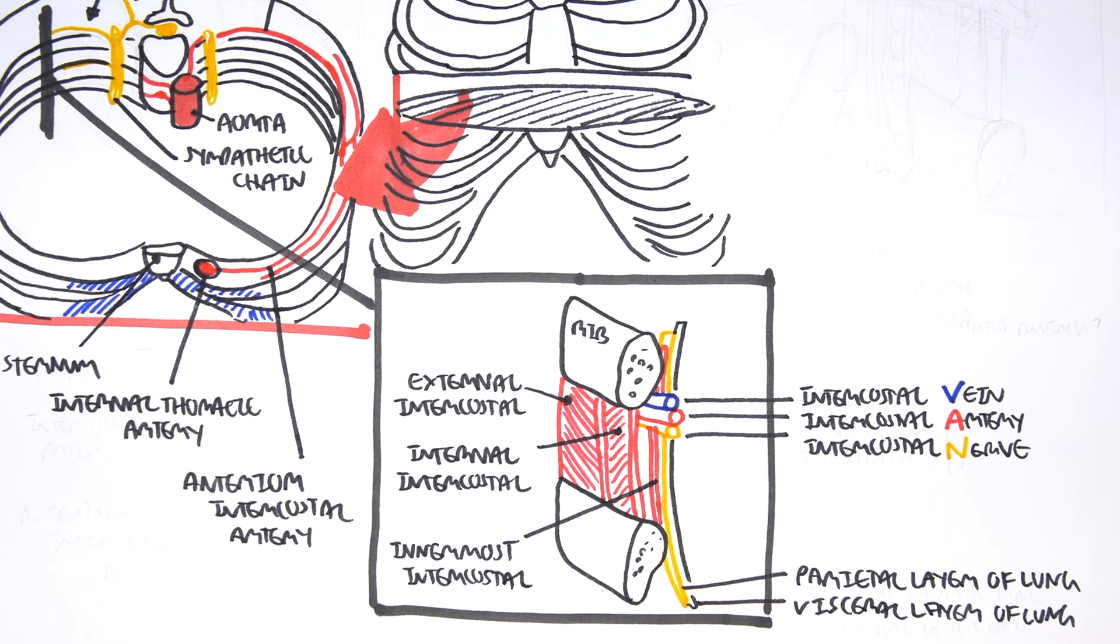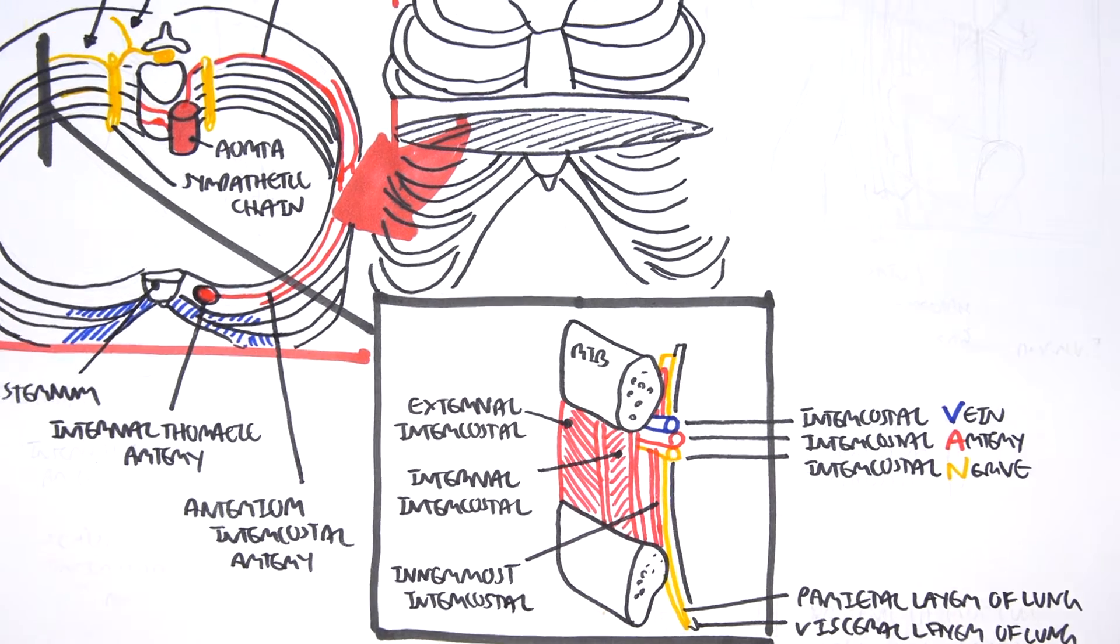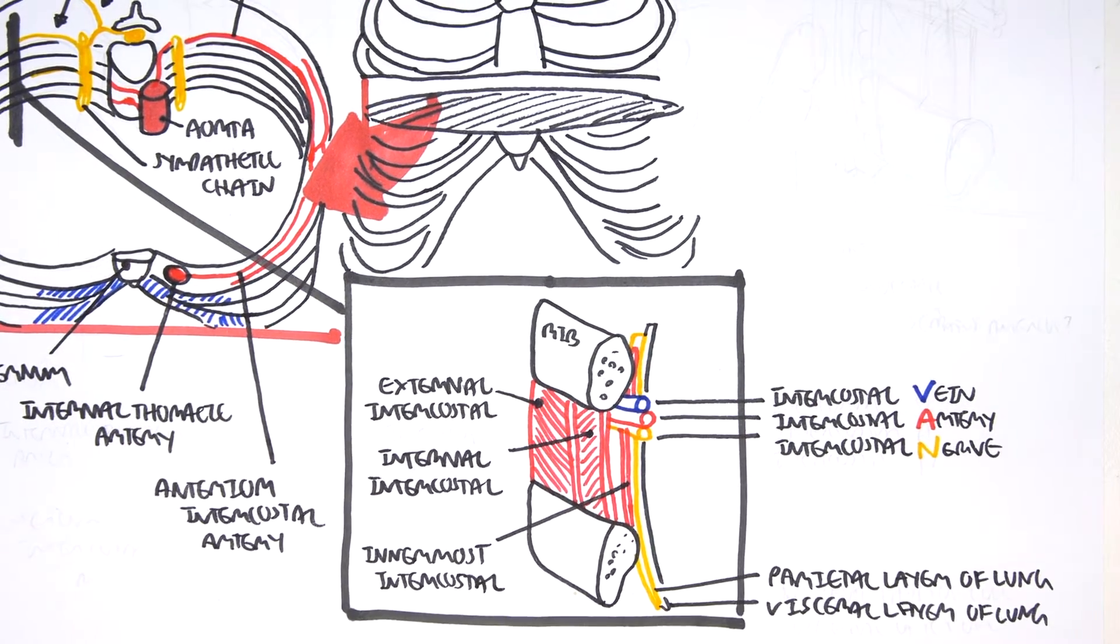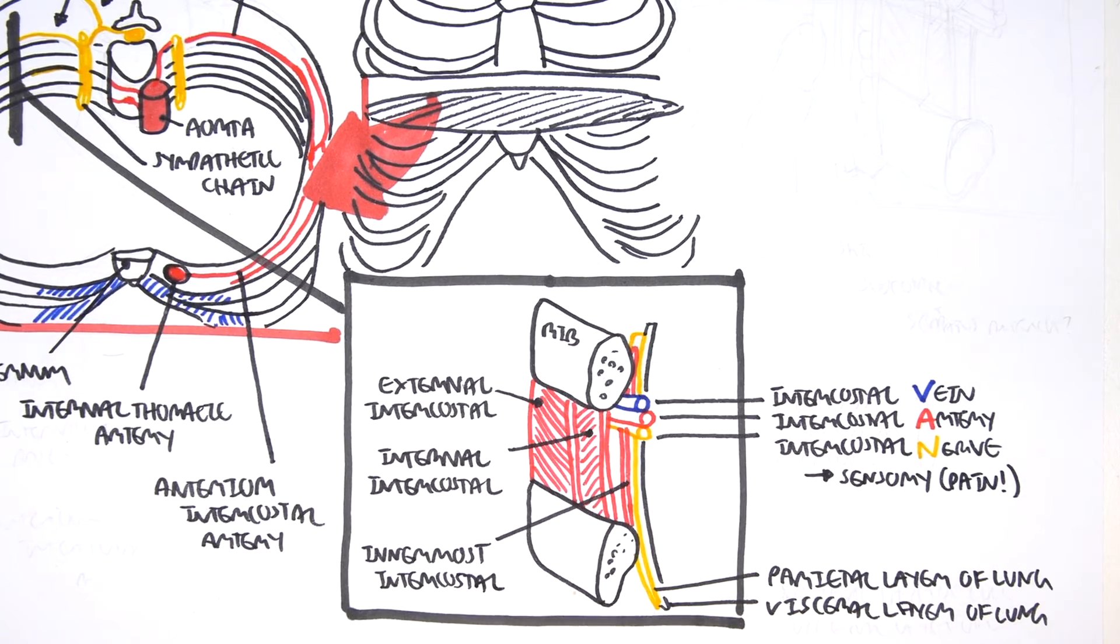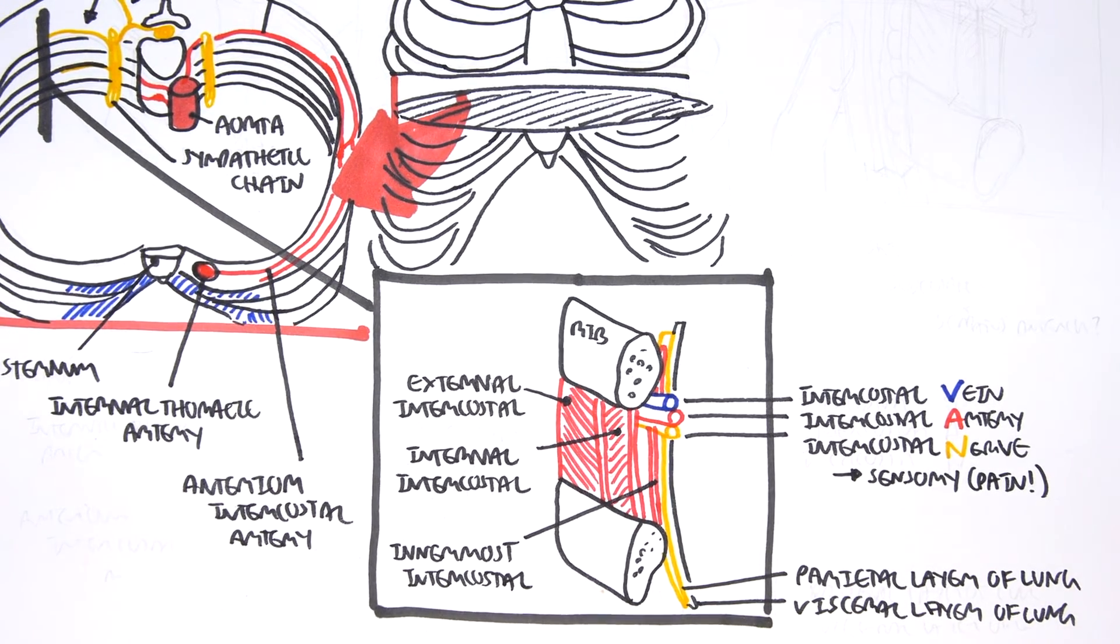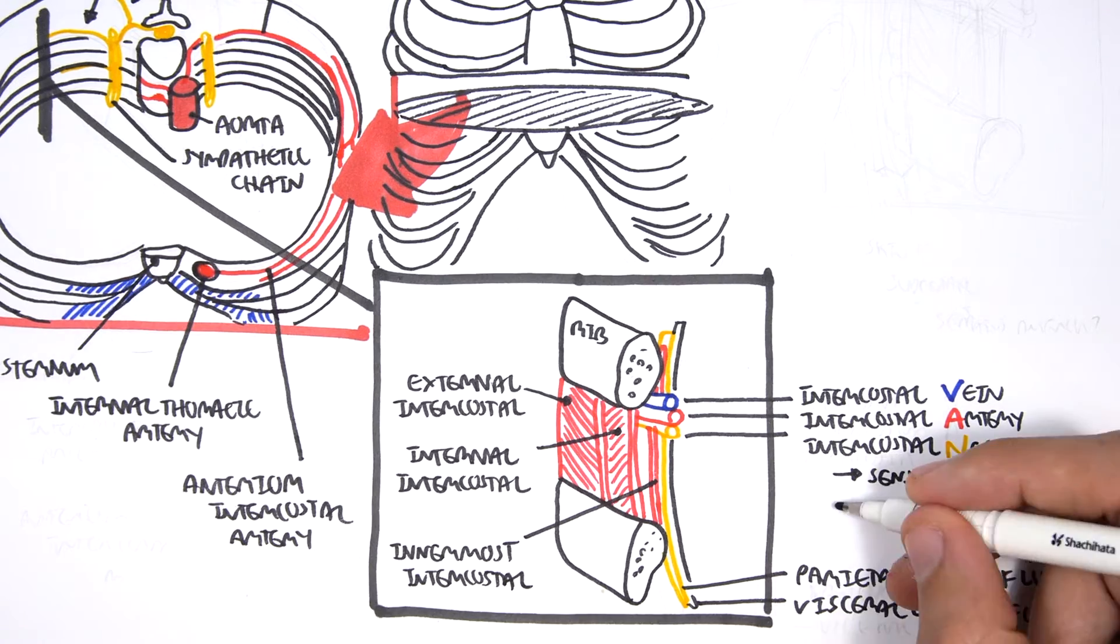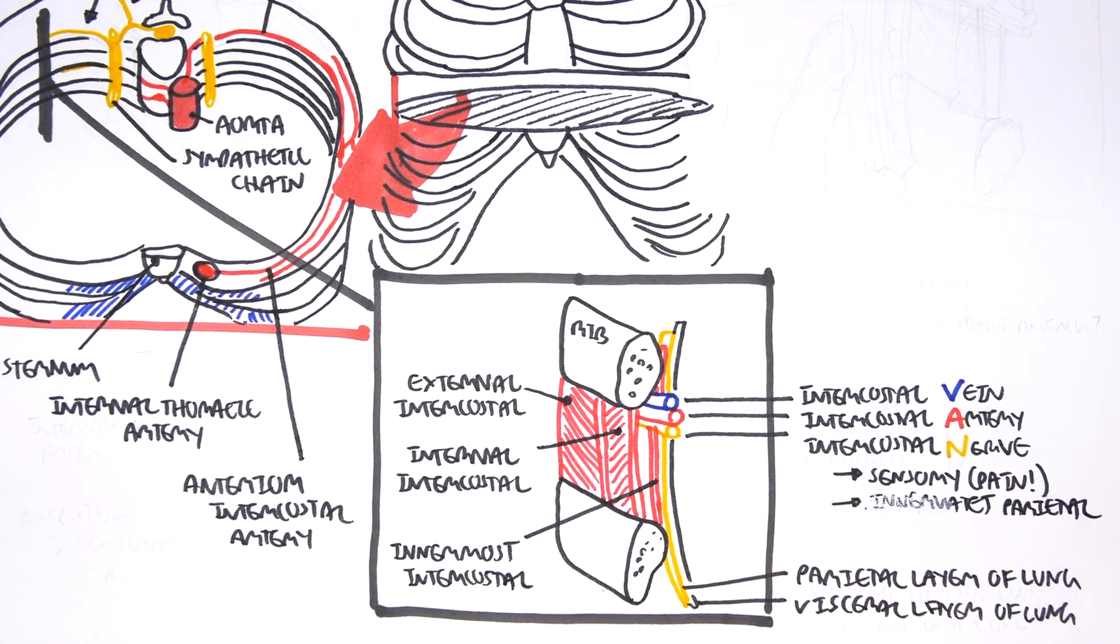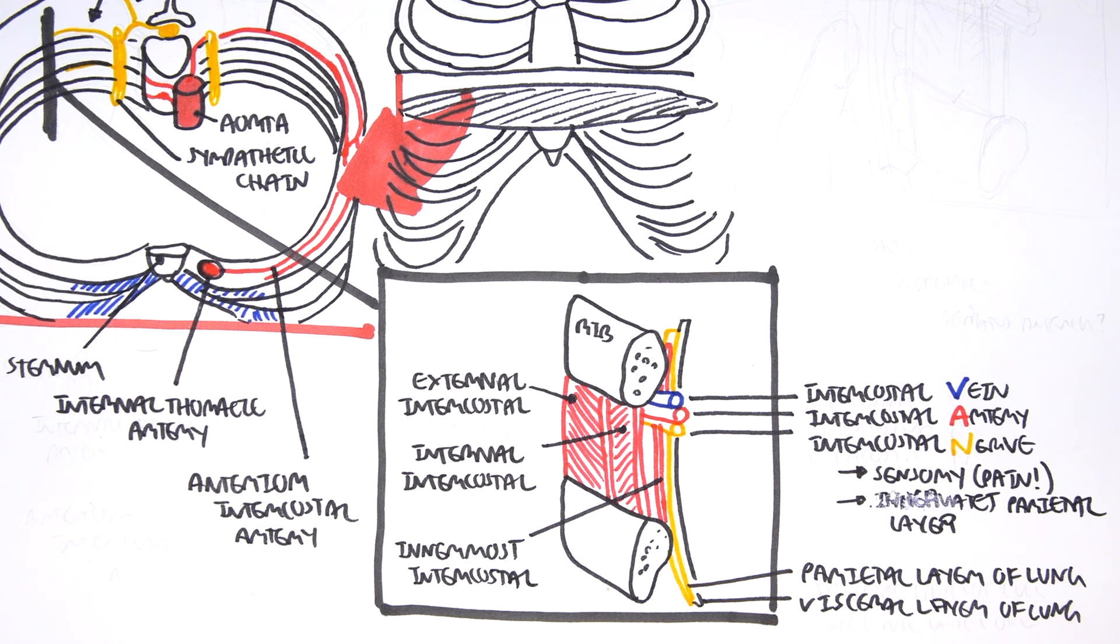Anyway, it's important to know about the intercostal nerve because the intercostal nerve is sensory. It can sense pain when there's pain involvement, when the ribs are fractured, for example. And also, it innervates the parietal layer. So if we have some pain within the pleural cavity, it can cause pain as well.